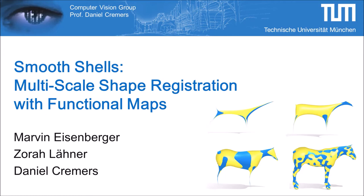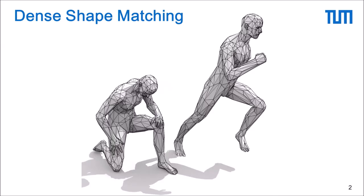Hi and welcome to this presentation. My name is Marvin Eisenberger and the work I'm presenting here is called Smoothshells: Multiscale Shape Registration with Functional Maps. Here, we are revisiting the classical problem of finding shape correspondences.